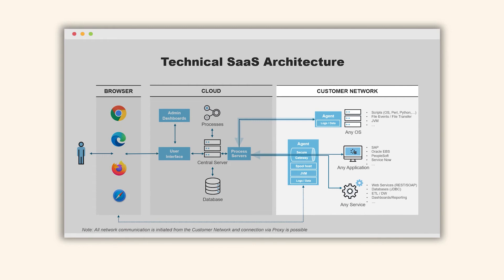The second type of process server links or connects to business applications such as SAP, Oracle and other technologies like JDBC, SOAP and REST. This means that Redwood can be used to automate any type of service. This connection is agent-less, not requiring any code or transports to be installed and hence is maintenance-free once set up.